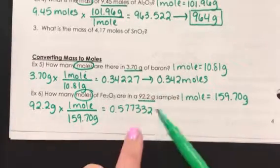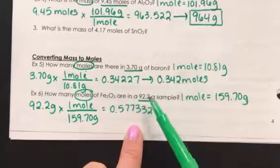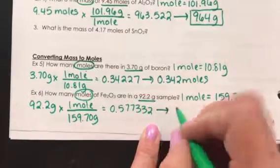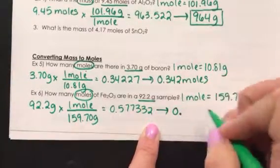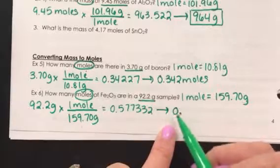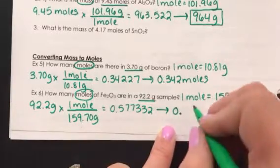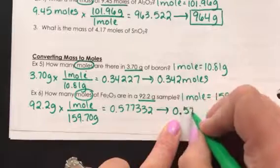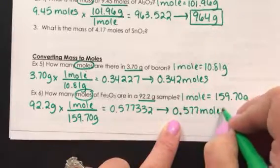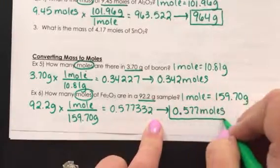Sig figs, again, this one are easy because there isn't any zeros. It has 3 significant figures, so our answer should also have 3. I forgot to say this earlier, but the zeros in the front of a number don't ever count, so we need .577 to have 3 significant figures in our answer.